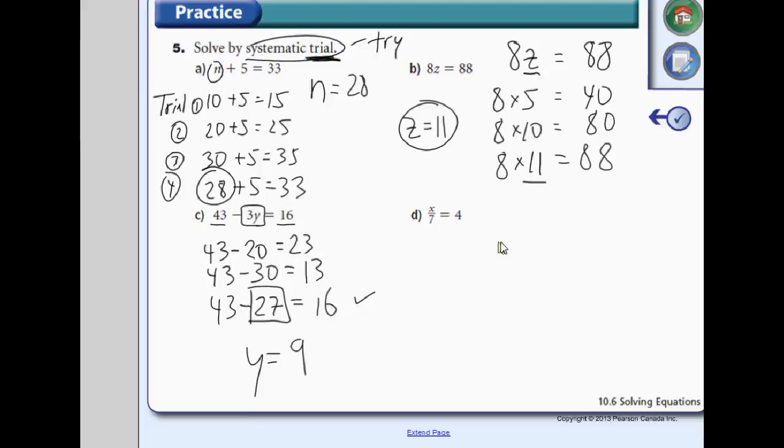And let's finally go to d. Some number, x divided by 7, is 4. Systematic trial. Well, 7 divided by 7. Let's try 7. Let's try x equals 7. Well, 7 divided by 7 is 1. Let's try 21 divided by 7. Well, that equals 3.